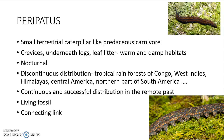Peripatus is a very small terrestrial worm, caterpillar-like in appearance, and is a predaceous carnivore. They usually live in crevices, underneath logs, leaf litter, and similar places because they prefer a warm and damp habitat. These animals are nocturnal, meaning they will be active during the night.